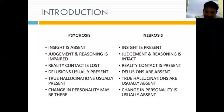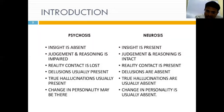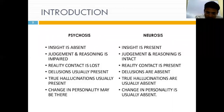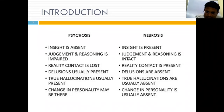We use the acronym JEPIC: Judgmental capacity, insight, contact with reality, personality deterioration — these four, along with delusions and hallucinations, define a psychotic patient. Insight means knowing about one's disease. In psychotic patients, insight is completely absent — they never feel they have a disease, so they are not ready to get treated. Judgmental capacity and reasoning are also absent.